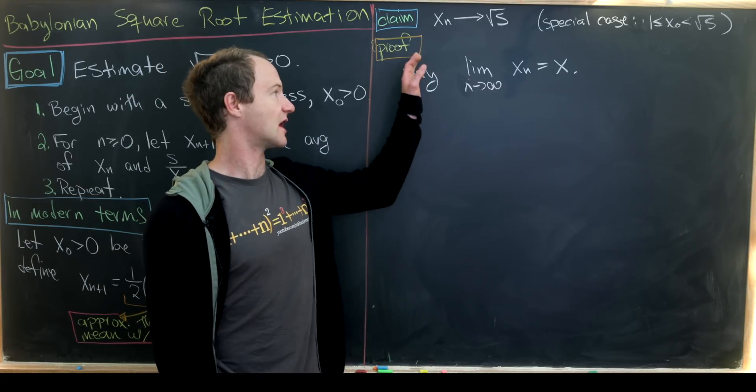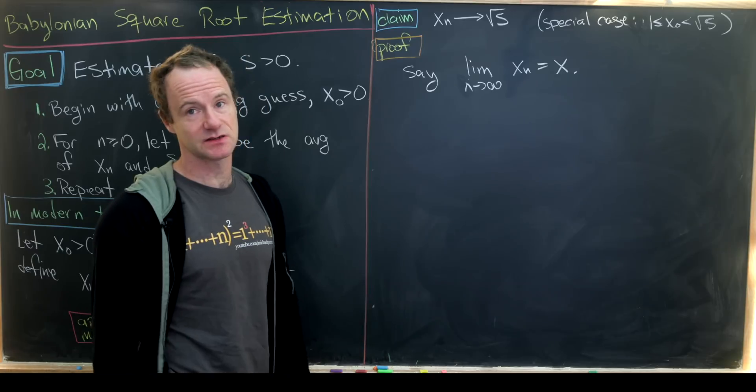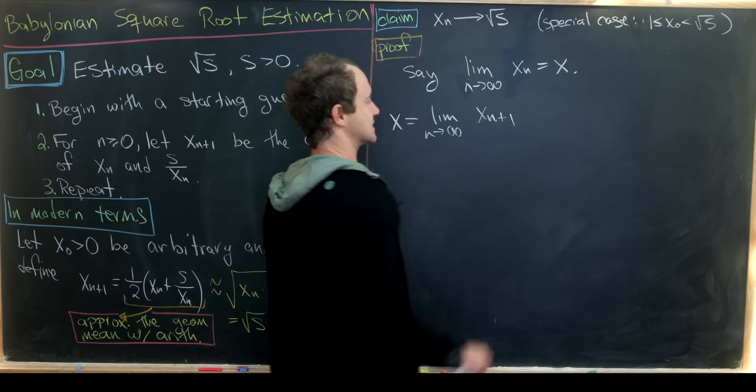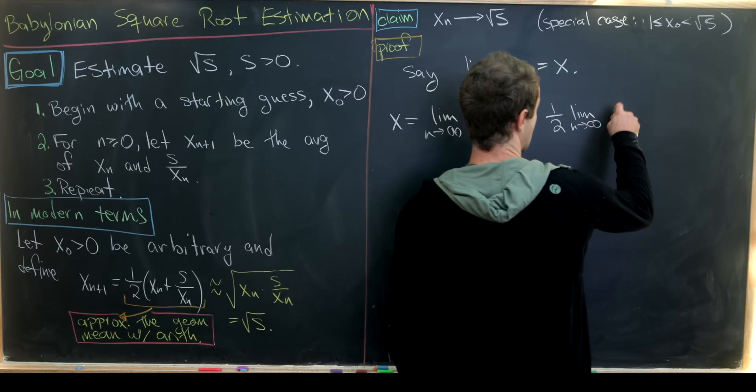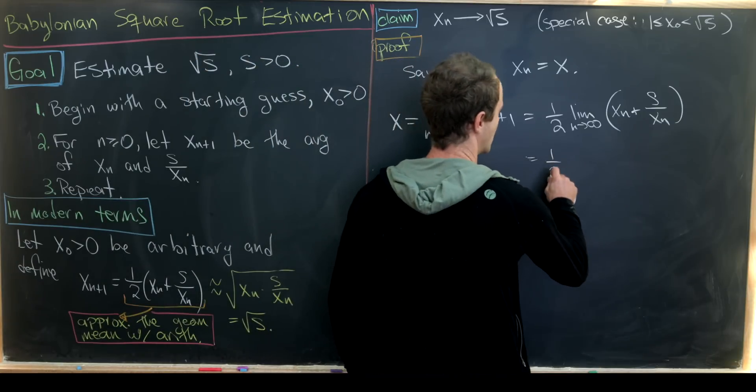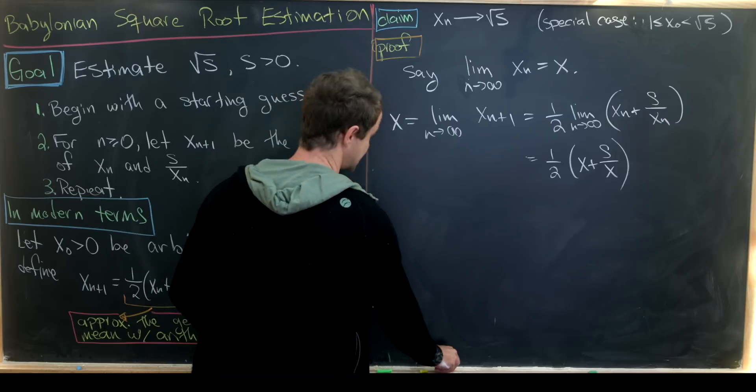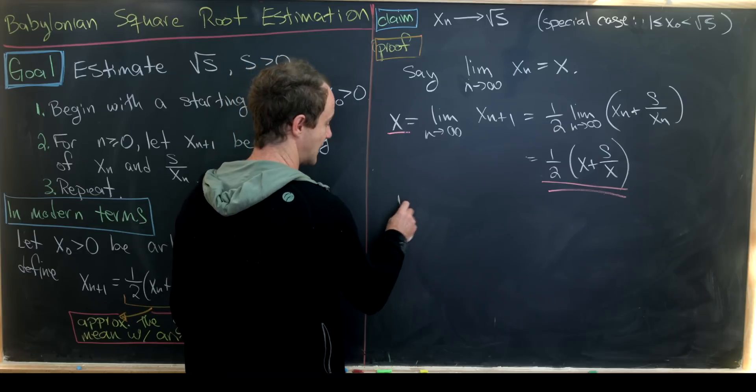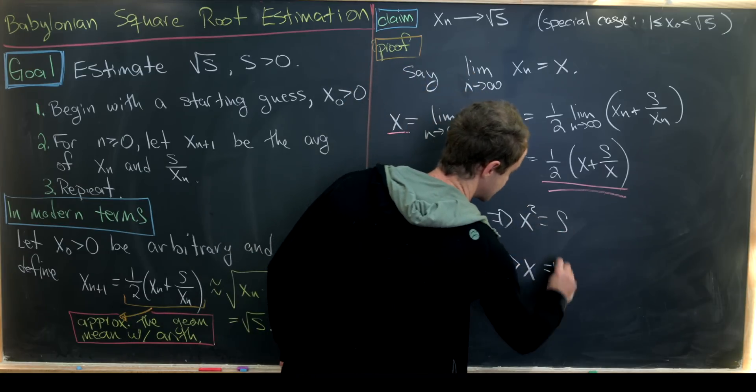We just got done showing that our sequence converges. Now we'll show that it converges to the square root of s. So we showed that it converges, so I'll call its limit x. And then we'll do a bit of a calculation. Let's notice we have x = lim(n→∞) xₙ = lim(n→∞) xₙ₊₁ = ½ lim(n→∞) (xₙ + s/xₙ). But now we can bring the limit inside of that calculation, and that leaves us with ½(x + s/x). And so that gives us a nice and fairly simple equation that we can solve for x. We can multiply that through and move the ½x over, and that leaves us with ½x = ½(s/x), which means that x² = s, which means that x = √s.